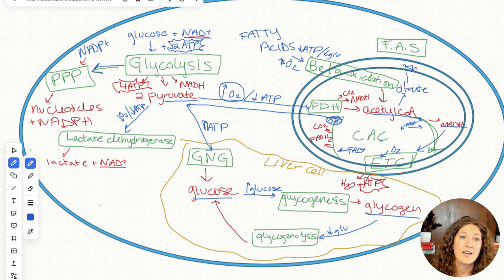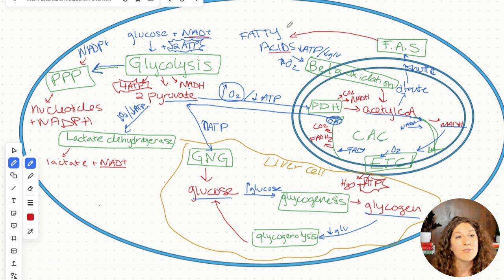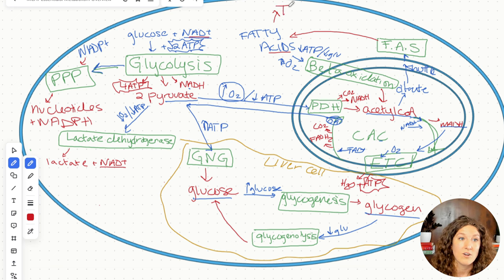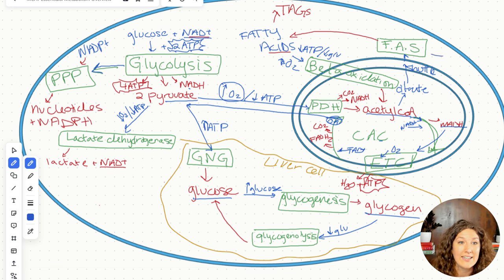We turn our acetyl-CoA into citrate, and through a couple of steps it shuttles itself out of the mitochondria, then becomes our precursor for fatty acid synthesis. Fatty acid synthesis produces our fatty acids, and from there we can go even further and build what's known as triglycerides — our final storage form of fats. In addition to the citrate coming in, we also need NADPH for fatty acid synthesis.